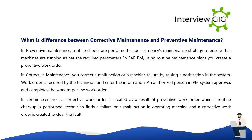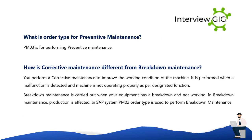In certain scenarios, a corrective work order is created as a result of a preventive work order — when a routine checkup is performed and the technician finds a failure or malfunction in the operating machine, a corrective work order is created to clear the fault. The order type for preventive maintenance is PM03. Breakdown maintenance is carried out when equipment has a breakdown and is not working, and production is affected. In SAP system, PM02 order type is used to perform breakdown maintenance.